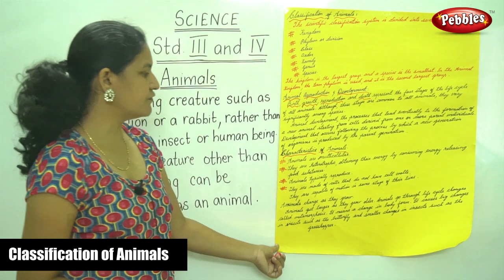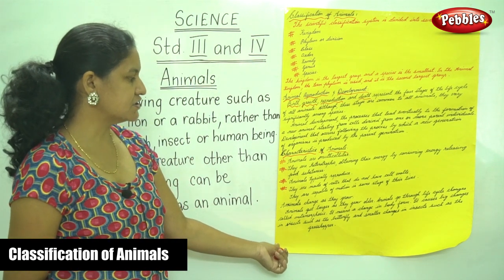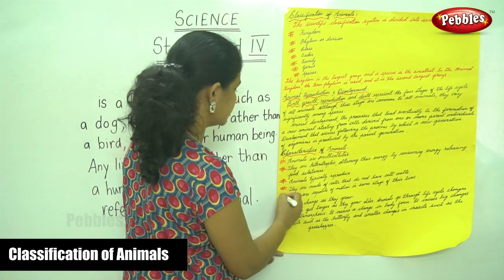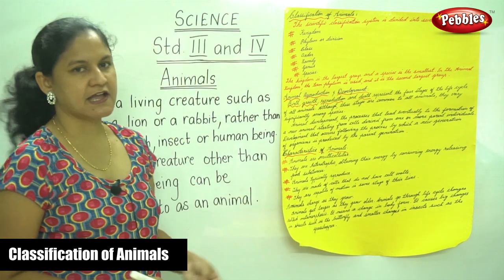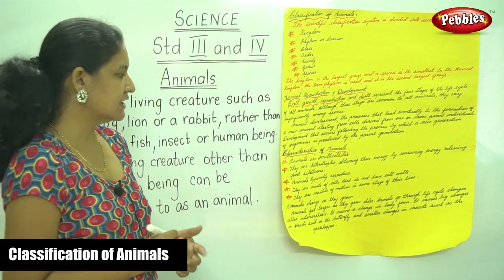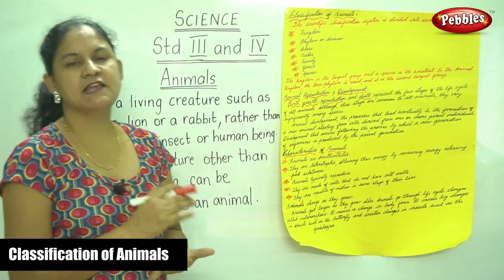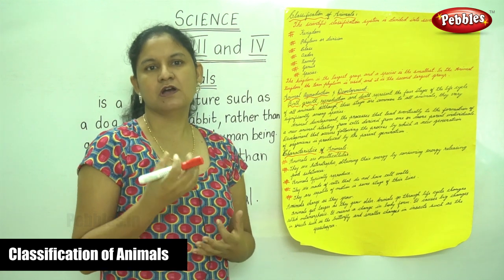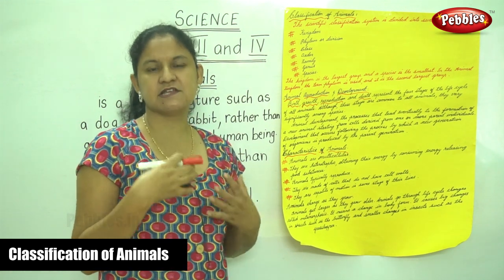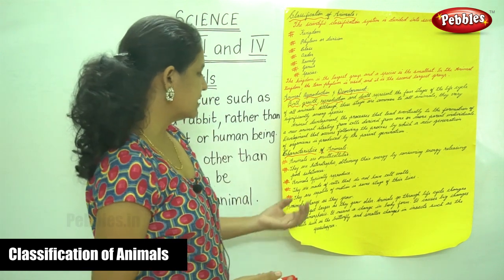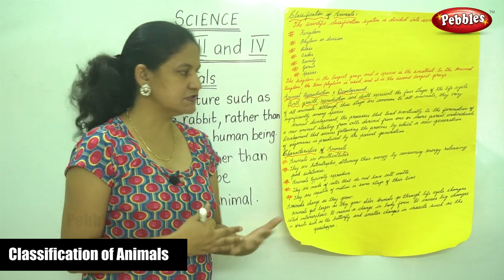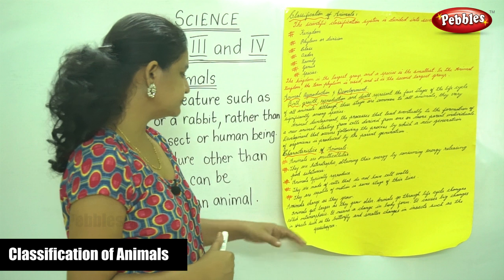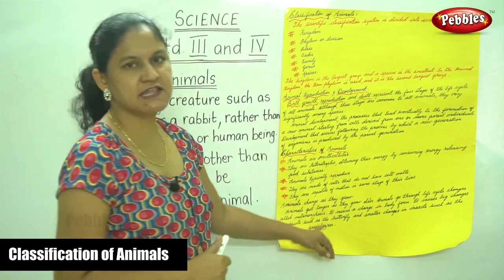Animals are capable of motion in some stage of their lives. So the characteristics of animals are: they are multicellular, their cells do not have a cell wall, they are heterotrophic consuming energy-releasing food substances, they typically reproduce, and they are capable of motion in their lives.